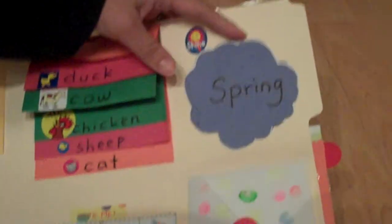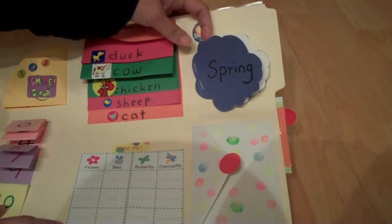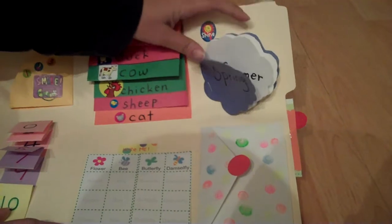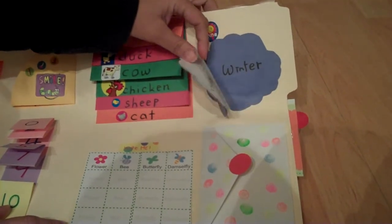And on this part, we have a shape book. I use the cloud for the four seasons: spring, summer, fall, and winter.